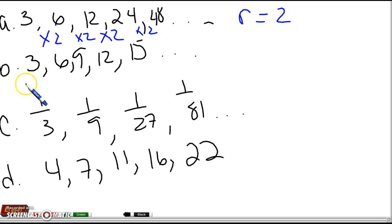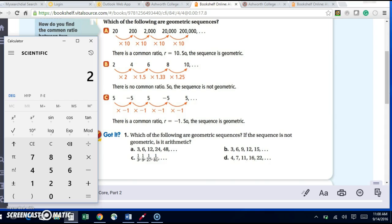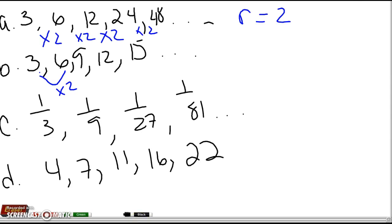Alright, let's look at B. Again, I know that 6 divided by 3 is 2, so that's times 2. 9 divided by 6 is 1.5. So I can stop there. I know it's not geometric. They asked if it was also arithmetic, so we'll see.